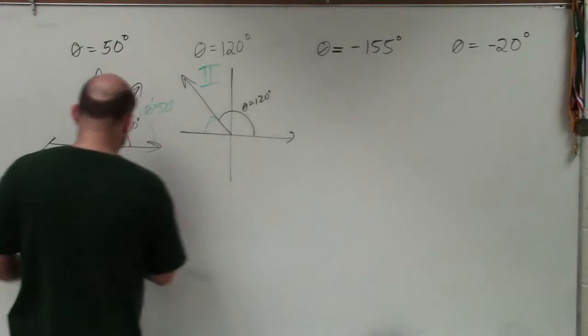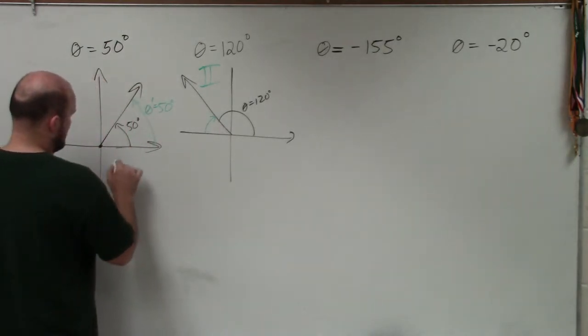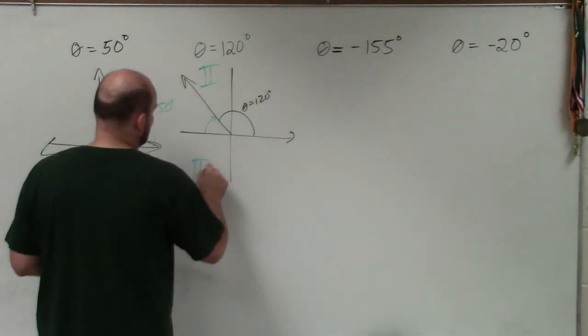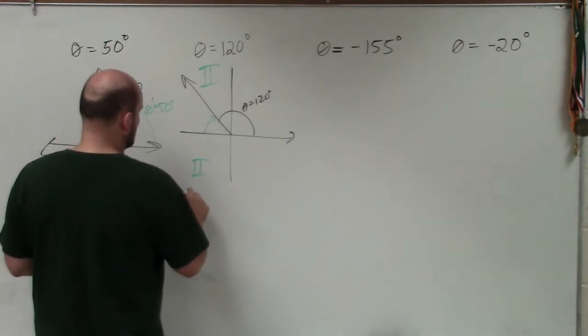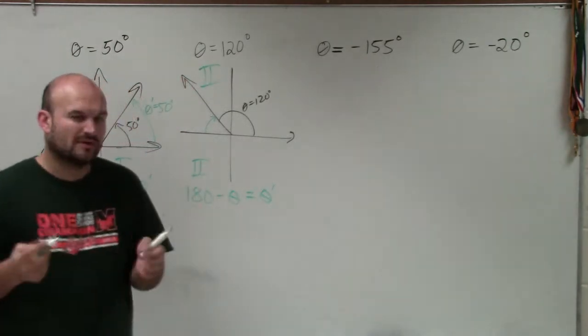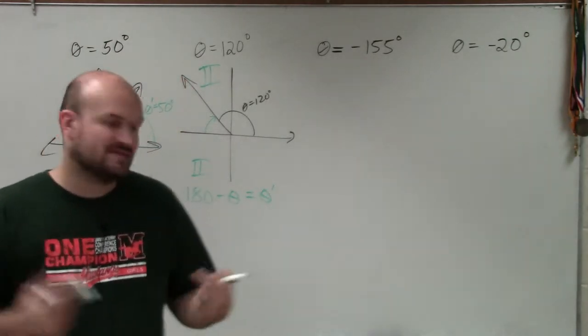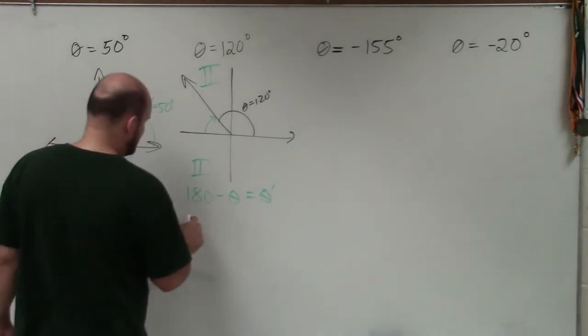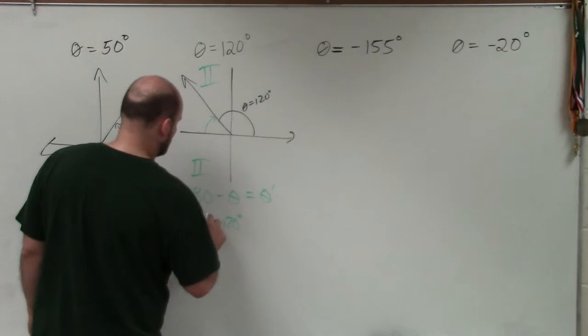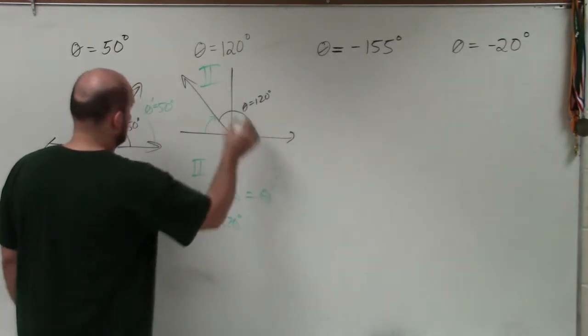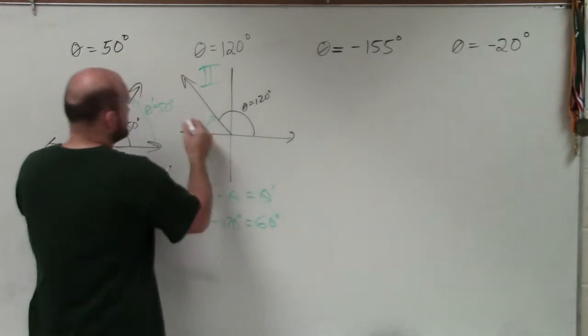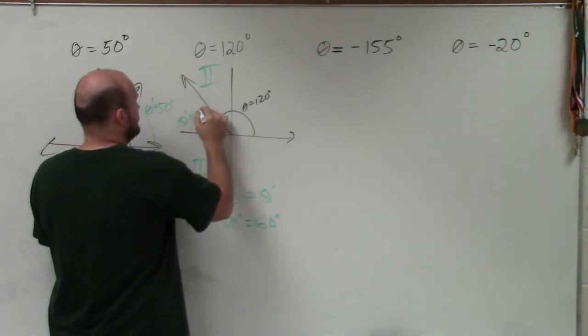Whenever you have something in the second quadrant, we basically have a formula for you. The rule for the second quadrant is you're going to do 180 minus theta equals theta prime. So in this case, I'm basically going to do 180 minus 120. These are all in degrees. 180 minus 120 equals 60 degrees. Therefore, theta prime equals 60 degrees.